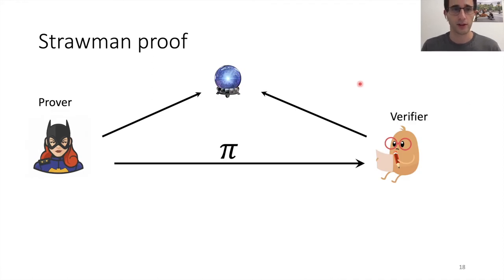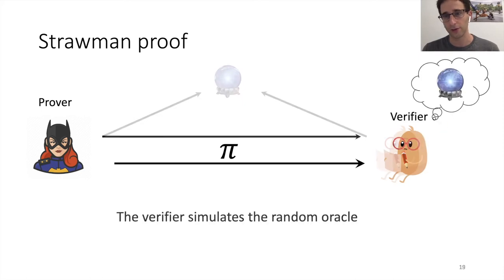So I'm going to start with a strawman proof. It will give us what we want with bad complexity measures and then we'll see how to improve them. So we start with a SNARG. So this is how it looks like. We want to get rid of this random oracle because an IOP doesn't have a random oracle. So we're going to push this oracle to the verifier.